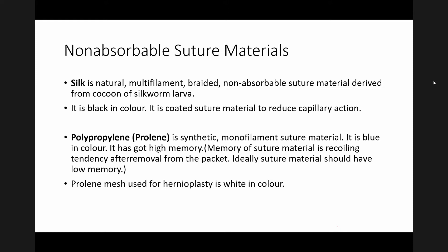Another example of a non-absorbable suture is polypropylene suture, also known as Prolene. It is synthetic, a monofilament suture material, blue in color, and has a high memory. Memory is the recoiling tendency after removal from the packet — ideally, suture material should have low memory. Sometimes in hernia repair surgery, Prolene mesh is used: the same suture material is woven into a mesh and placed during hernia surgery.